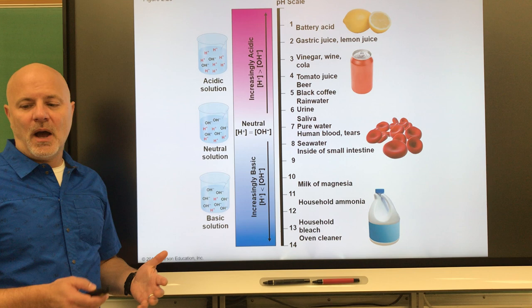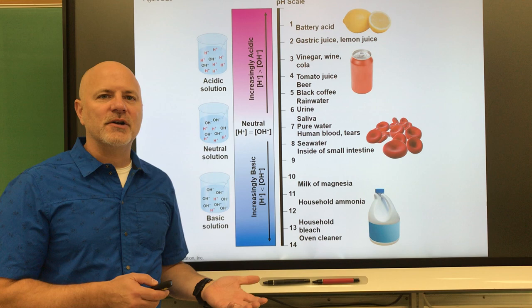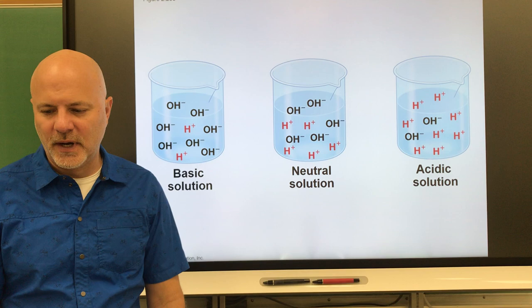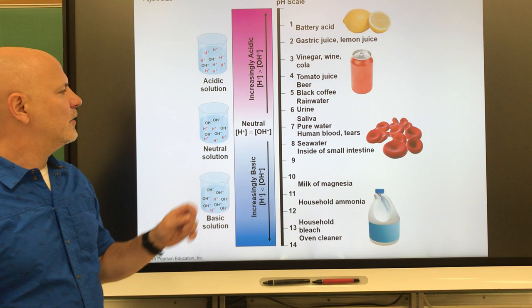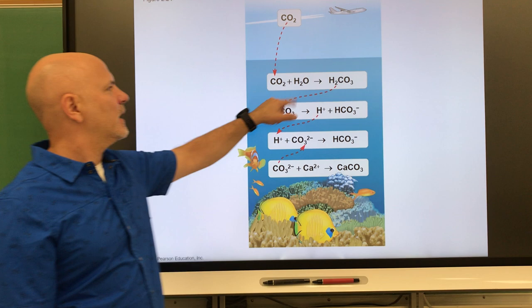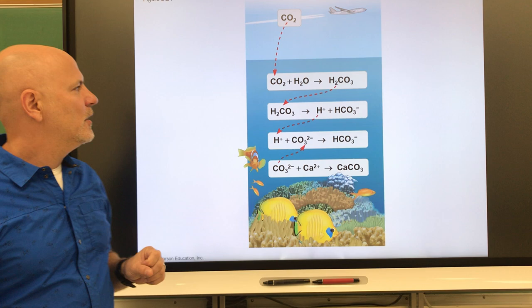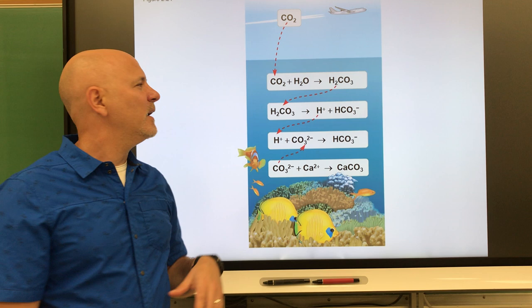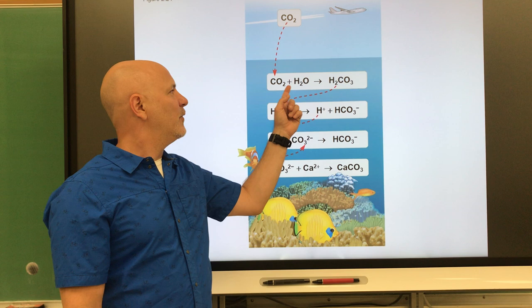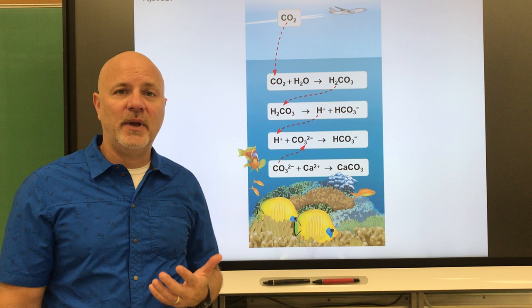Water separates into hydrogen ions and hydroxide ions. If you have the same number of hydrogen ions and hydroxide ions, they offset each other creating a neutral solution — so pure water is neutral. Human blood is just slightly basic at pH 7.4. An important reaction: carbon dioxide combined with water produces carbonic acid, which is one of the main ways we regulate blood pH. If our blood is getting too acidic, we increase our respiratory rate to exhale more carbon dioxide, which reduces carbonic acid and makes the blood more basic.